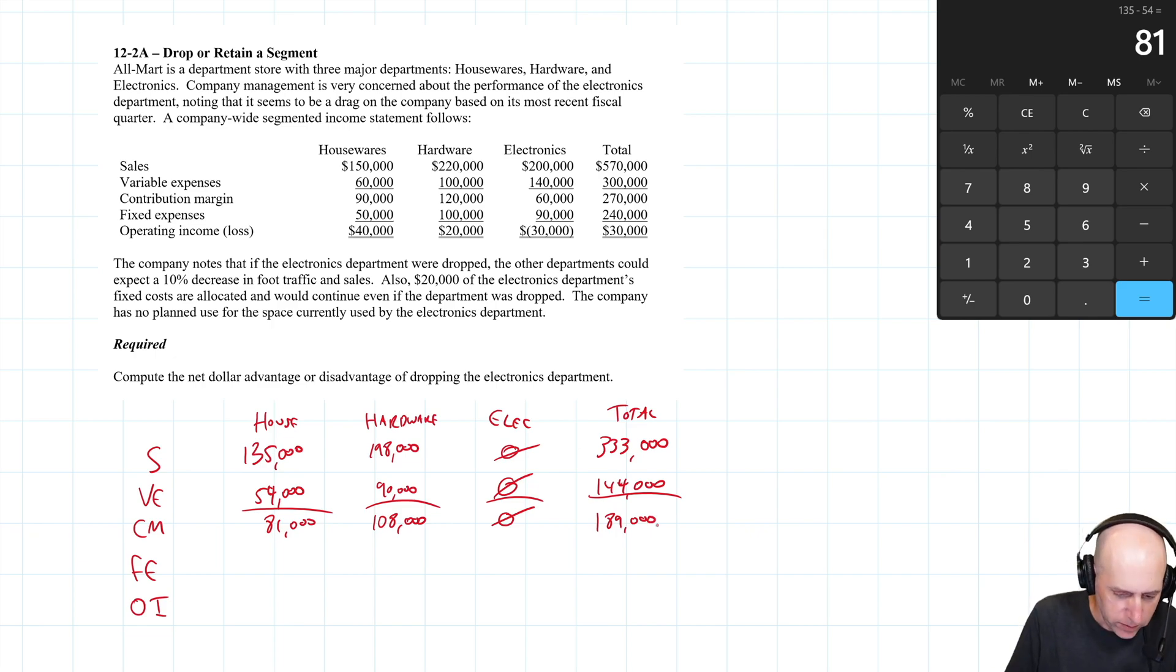Fixed expenses are fixed. So our housewares stays at 50. Our hardware stays at 100. And our electronics, part of the reason we're getting rid of electronics is to drop the expenses. We do get rid of most of the expenses, but remember, $20,000 of electronics fixed costs remain in the company. They're allocated costs.